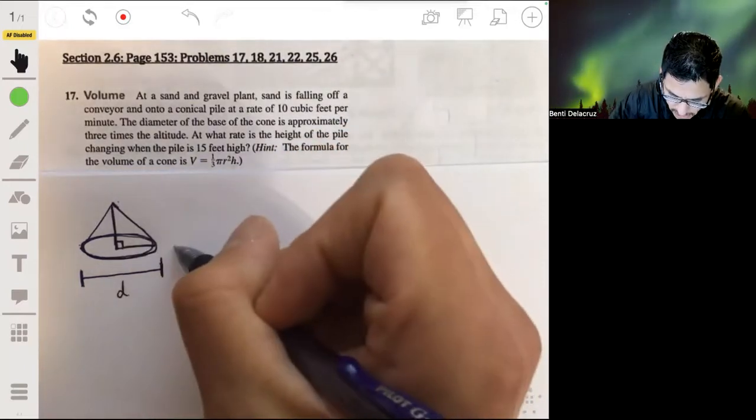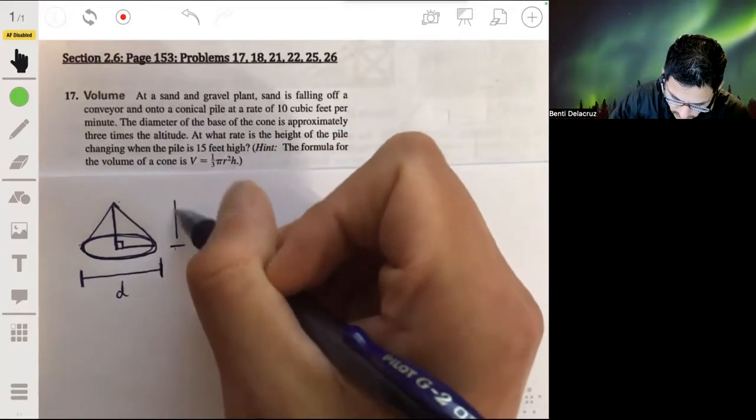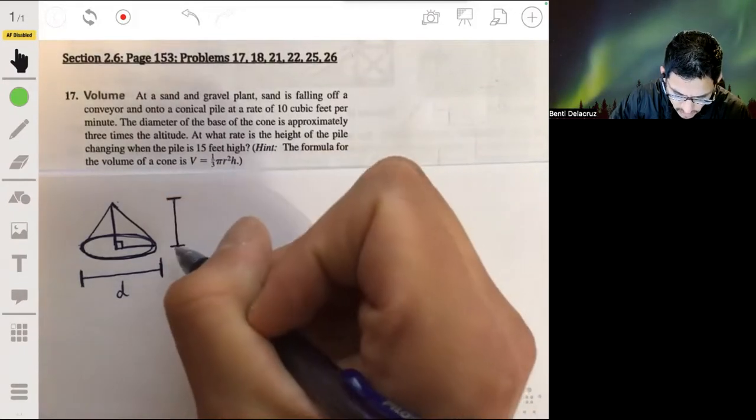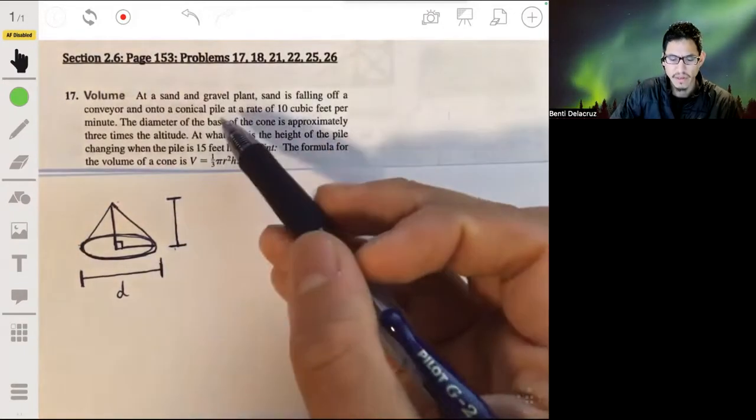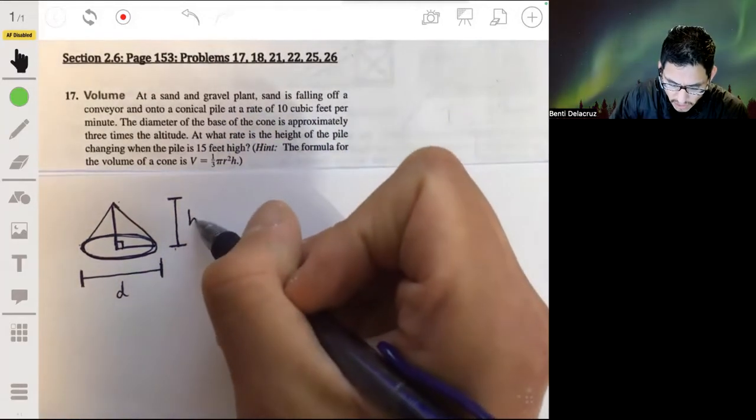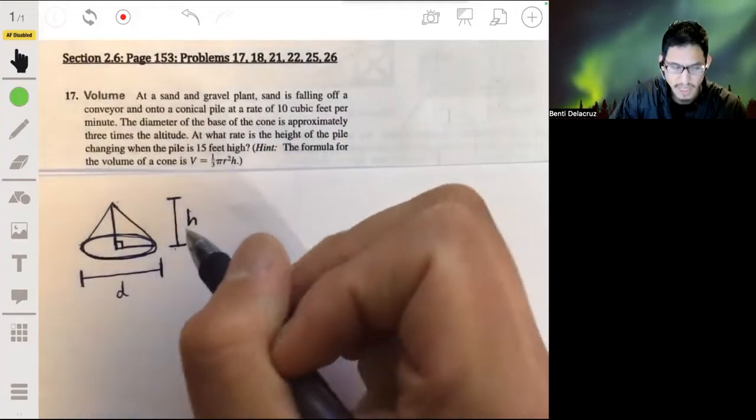And then from here to here, that's the height of the pile or the altitude, but we'll just go ahead and mark it as h for height.